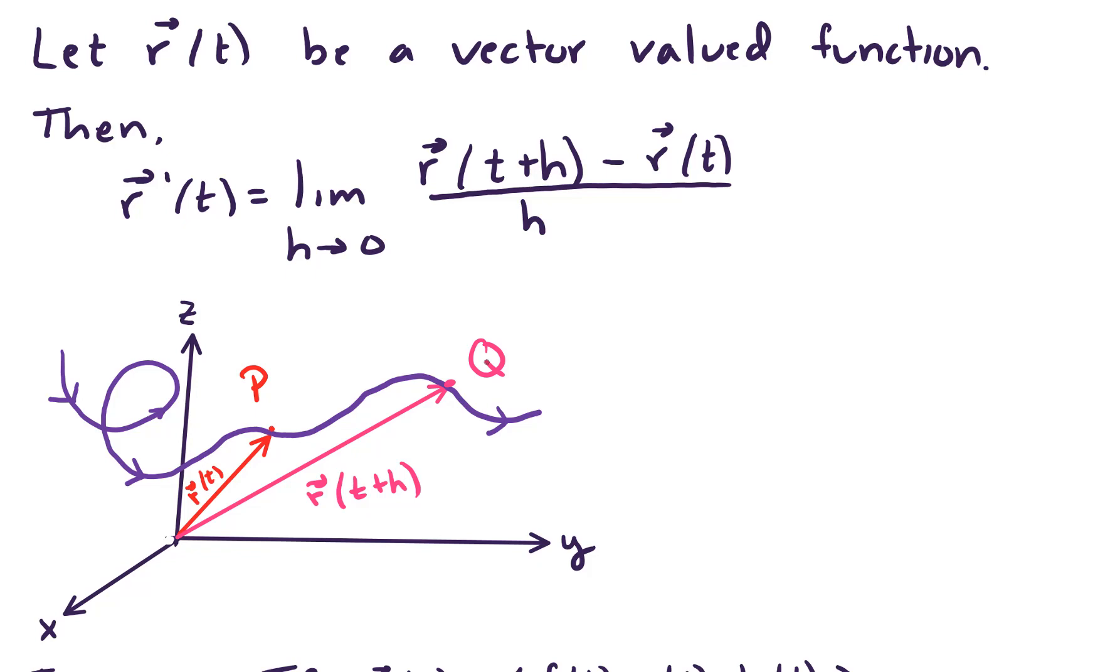Well, let's look at the difference between those two vectors. And if we look at the difference between those two vectors, that's another vector going from P to Q. And so I'm going to label that purple vector right there. That is r of t plus h minus r of t.